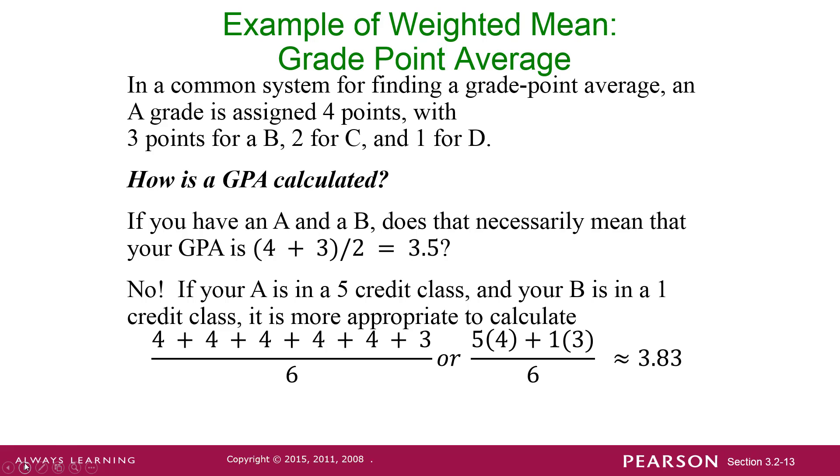So you treat it as though you had 5 classes of 1 credit hour that you got As in all of them and only one class of 1 credit hour that you got a B.